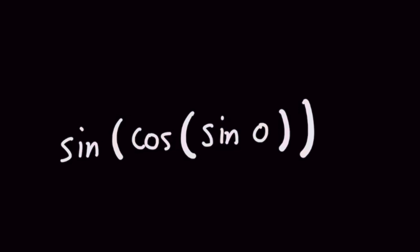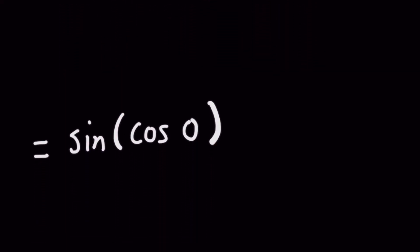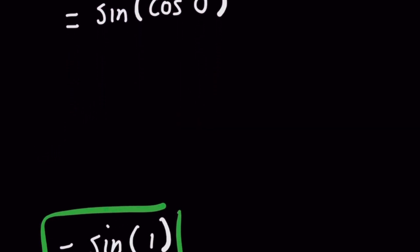So this is pretty simple because now sine of 0 for the inside will give you a value of 0 and so we're going to plug that into the next part of the composition the cosine function and this simply gives you sine of 1.